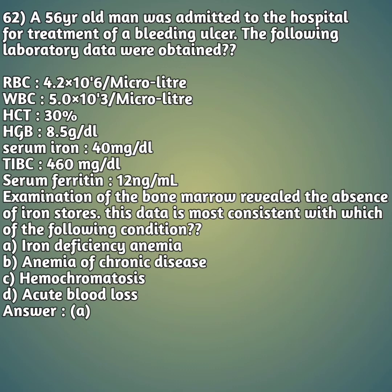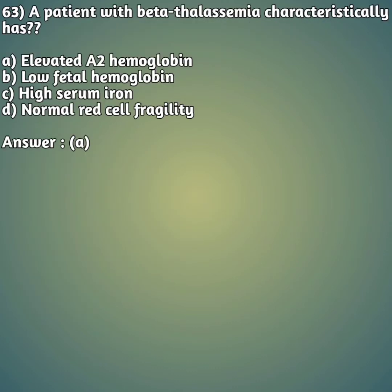Moving to our 63rd question: a patient with beta thalassemia characteristically has - option A: elevated A2 hemoglobin. Option B: low fetal hemoglobin. Option C: high serum iron. Option D: normal red cell fragility. The right answer is answer A - elevated A2 hemoglobin.